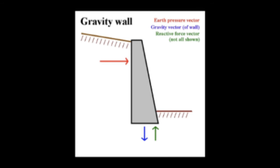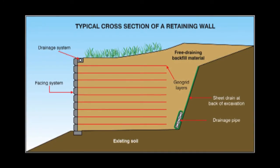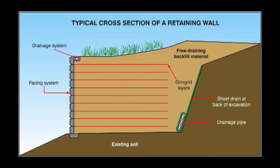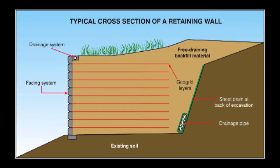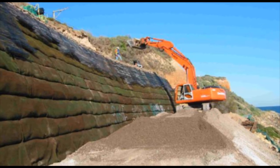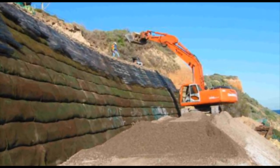A traditional retaining wall relies on gravity. The wall base is extremely thick to resist earth pressure, and it takes longer to build and requires more labour. The geosynthetic reinforced retaining wall uses a thinner facing system, allowing faster and more economical construction. This approach gives engineers flexibility to create walls in difficult and confined construction sites.